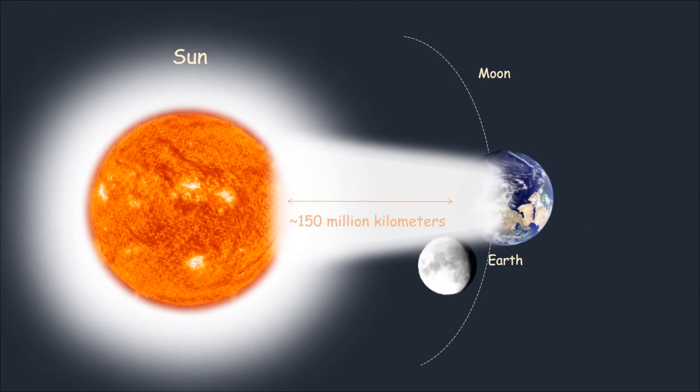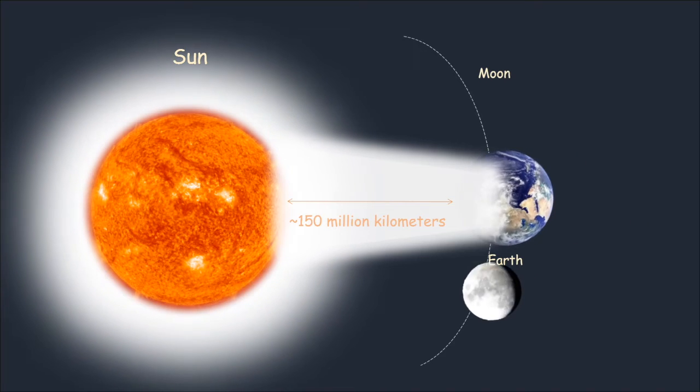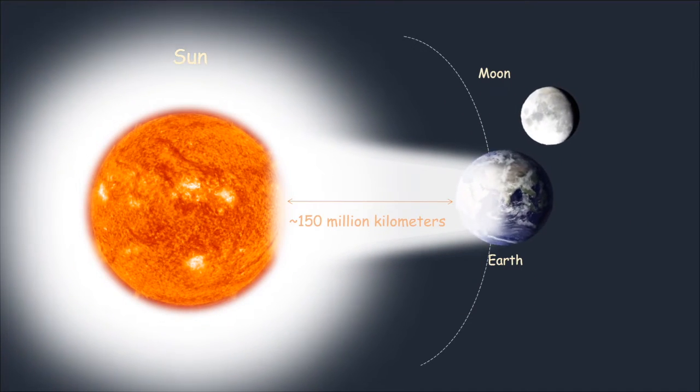Here the sun emits the light, so it is called a luminous object, while the Earth and moon that do not emit light are called non-luminous objects. Let us learn more about luminous and non-luminous objects. The objects that can emit light energy by themselves are known as luminous objects.